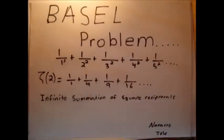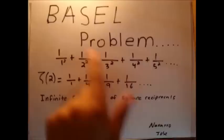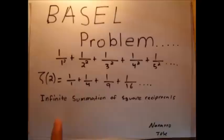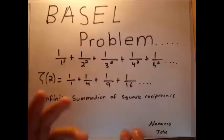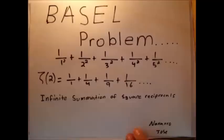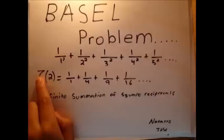Hello, welcome back. Today we're going to discover the Basel problem. What the Basel problem states is the infinite summation of square reciprocals — meaning squared in the denominator. So for example, 1 over 1 squared plus 1 over 2 squared, and so on, which simplifies to 1 over 1, 1 over 4, 1 over 9, 1 over 16, all the way to 1 over n squared — which is actually the Riemann zeta function at 2.